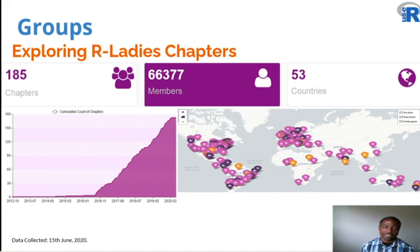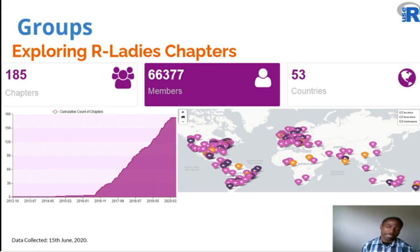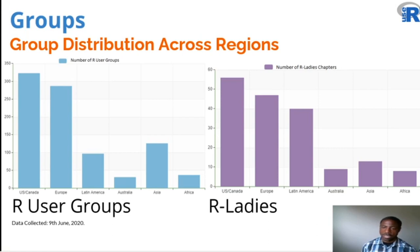R Ladies also has a global presence. R Ladies represent a tremendous asset to the R community, and we want to thank founders including Claudia Vitolo, who collaborated with Ben Uba and myself on the Google Summer of Code project in 2019, R Community Explorer. There are almost 200 chapters worldwide. The line graph on the left shows sustained growth, and we see global representation on the right, with more chapters in Latin America than might be expected.